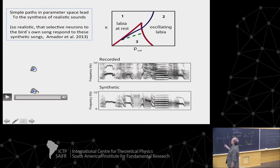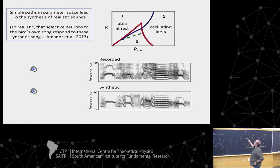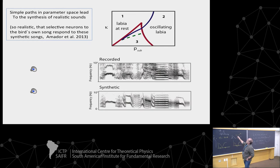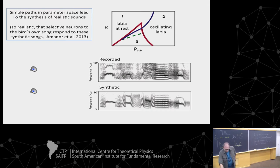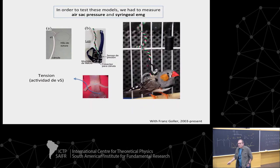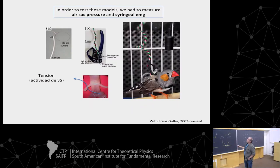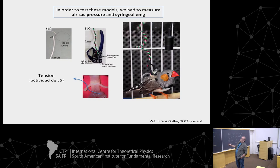This is what these normal forms were generating as sound when you would have this path in parameter space driving the normal form. In order to validate this model, for a long time we have been measuring these two parameters: the air sac pressure and the syringeal muscle activity. So we have measurements.